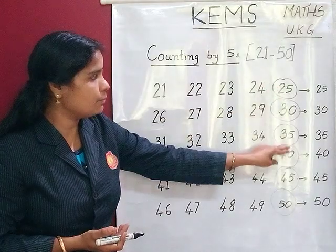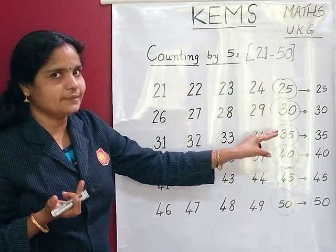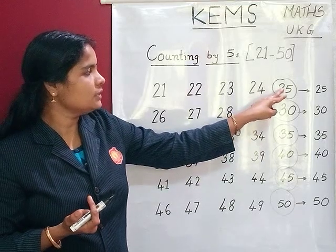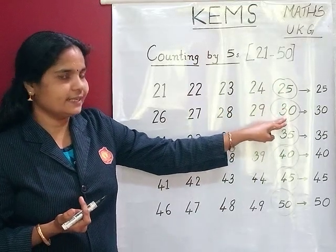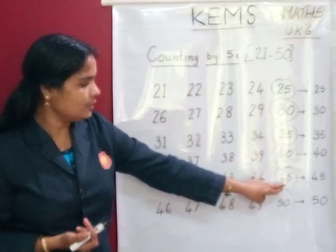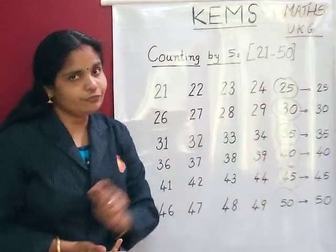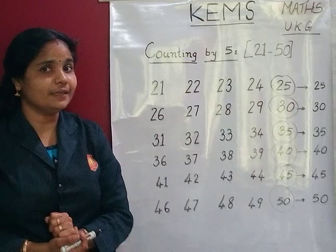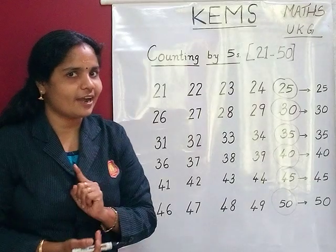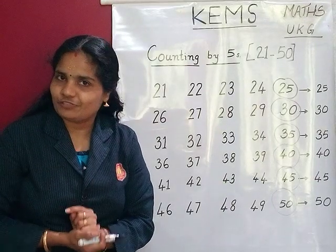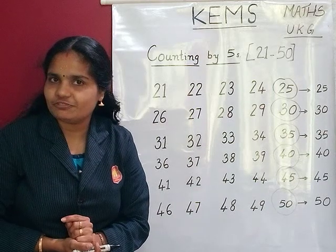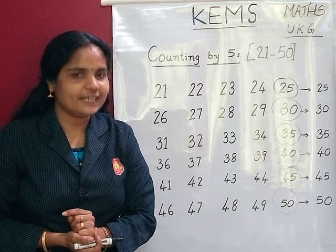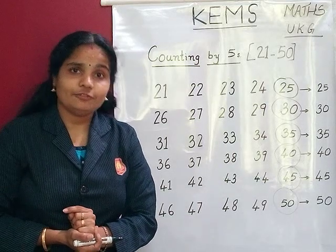So there is a gap of 5. Once again: 25, 30, 35, 40, 45, 50. So children, once again from the beginning: 5, 10, 15, 20, 25, 30, 35, 40, 45, 50.